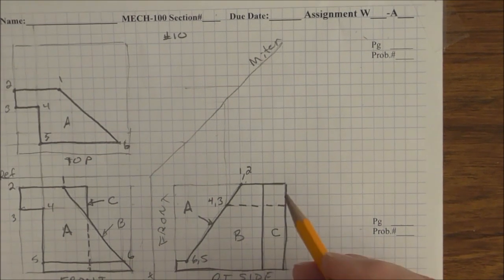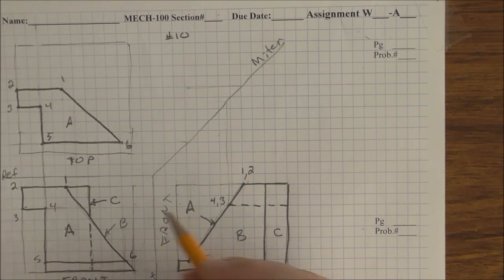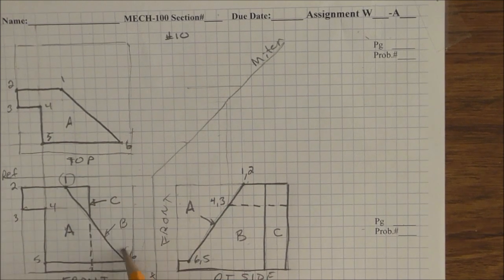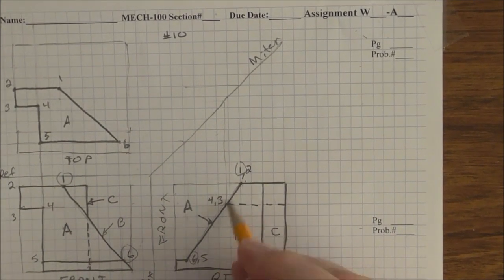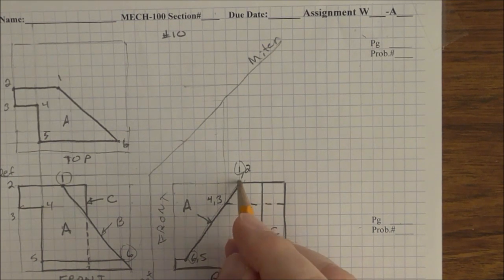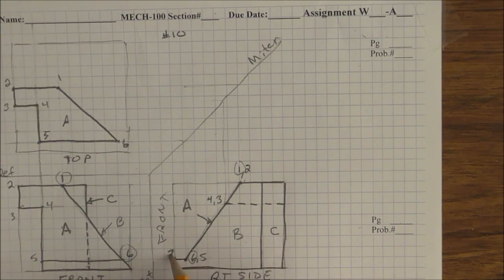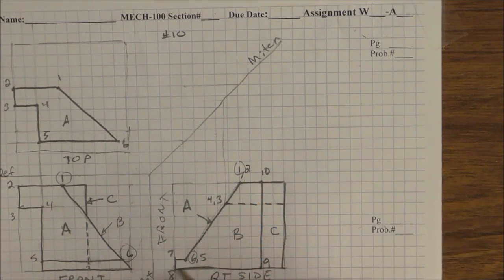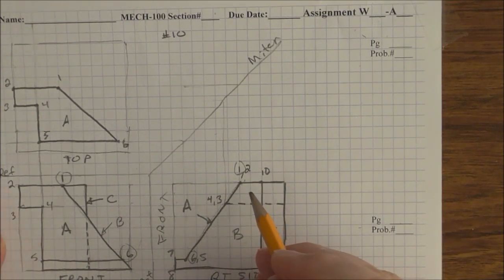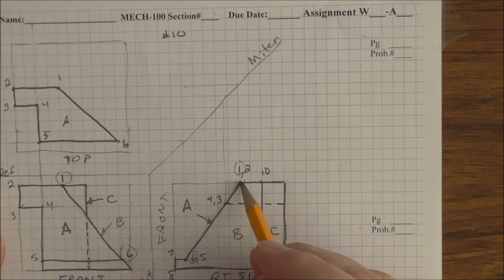Now we already know two points on B because they're also on A. 1 and 6. So we already know 1 and 6. Let's count the rest of them. 1, 6, 7, 8, 9. Not this one. This is on C. 10. So we have the perimeter of B labeled, numbered, the endpoints.